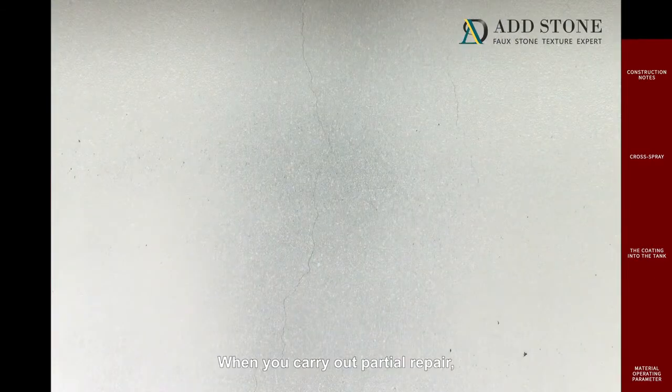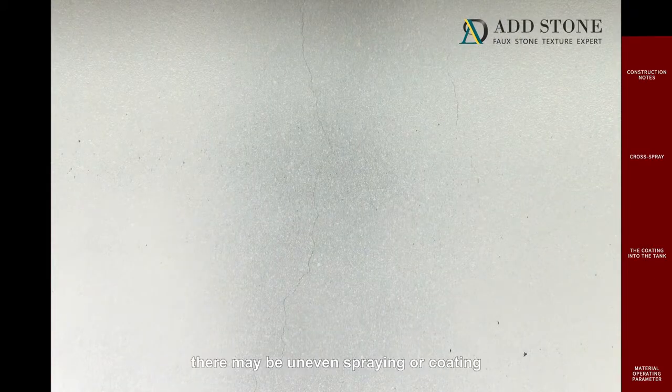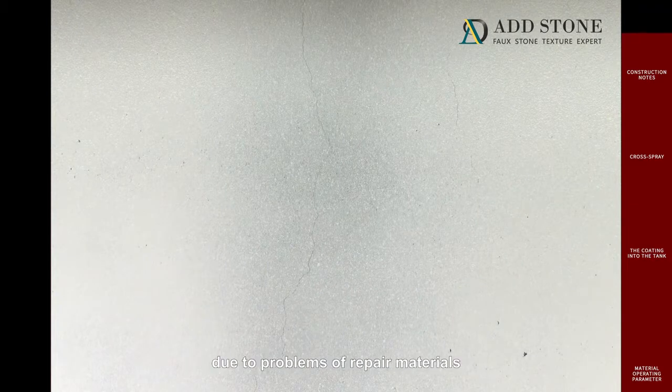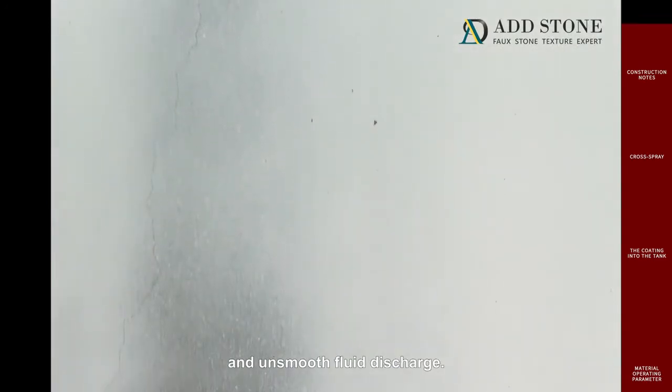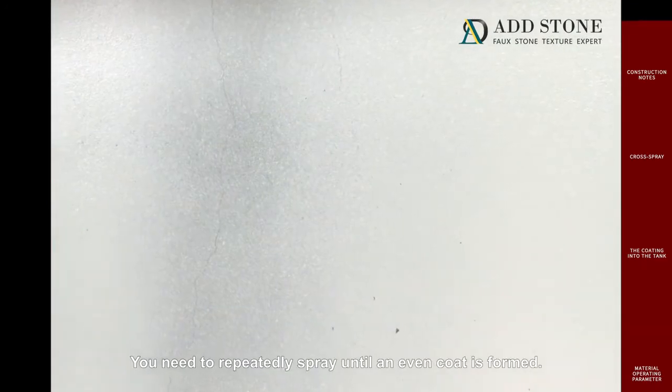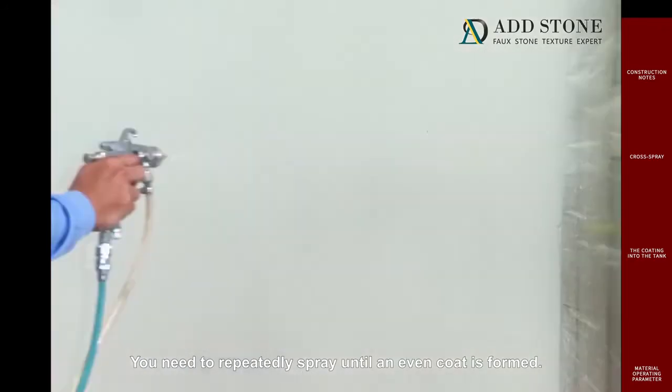When you carry out partial repair, there may be uneven spraying or coating due to problems of repair materials or equipment problems such as clogged spray gun and unsmooth fluid discharge. You need to repeatedly spray until an even coat is formed.